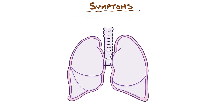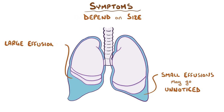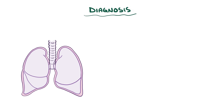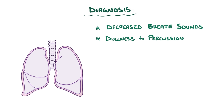Symptoms of a pleural effusion mostly depend on its size. A small effusion might go unnoticed, whereas a large one might cause pain while inhaling, called pleurisy, as well as shortness of breath, which might be more obvious only when lying down flat. Classically, a pleural effusion will cause decreased breath sounds, dullness to percussion (which is tapping on the back), and decreased tactile fremitus.